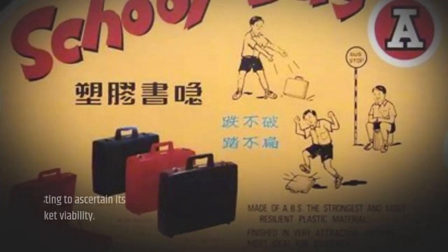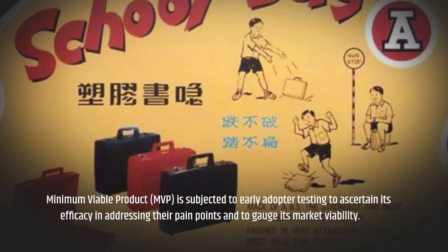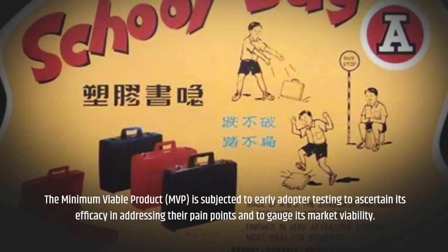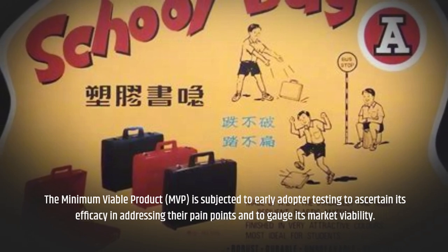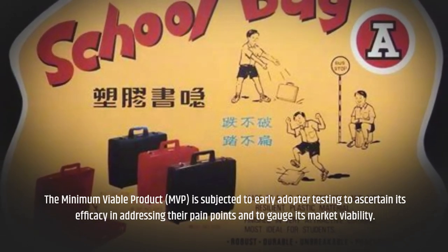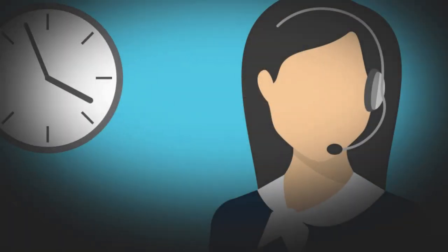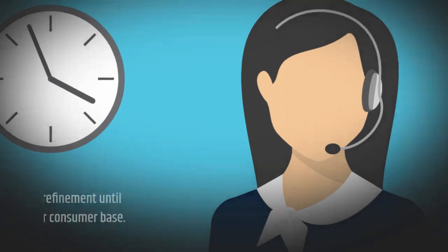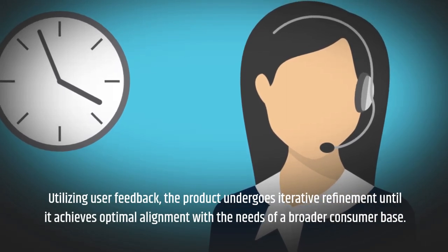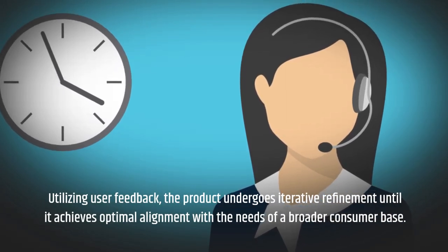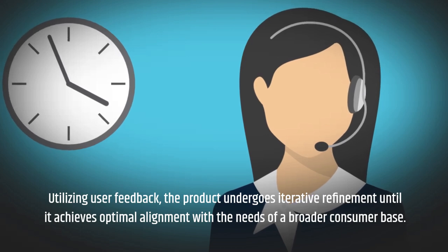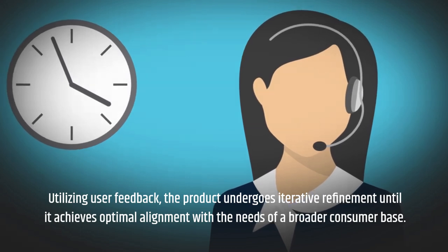The minimum viable product is subjected to early adopter testing to ascertain its efficacy in addressing their pain points and to gauge its market viability. Utilizing user feedback, the product undergoes iterative refinement until it achieves optimal alignment with the needs of a broader consumer base.